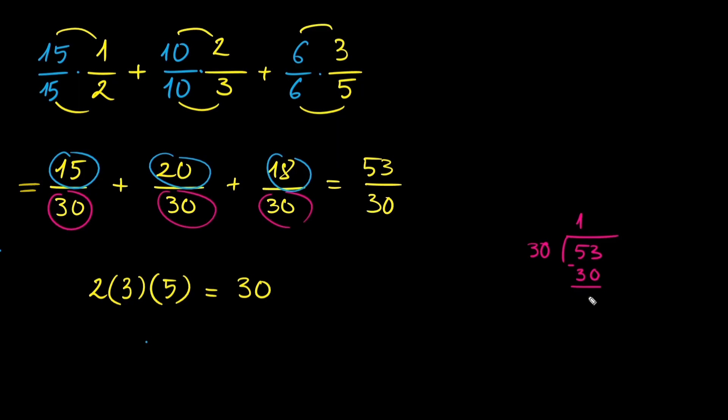30 goes into 53 one time with a remainder of 23. So the final answer is 1 and 23 over 30.